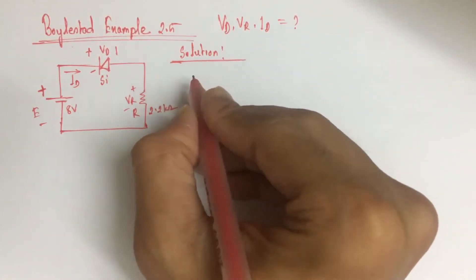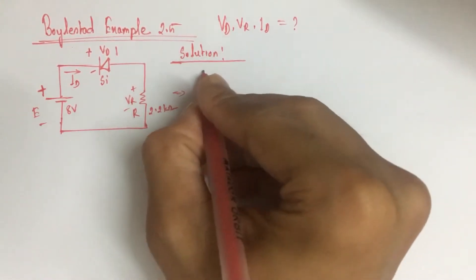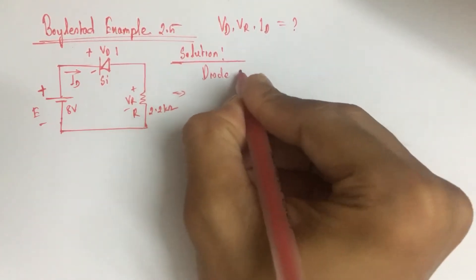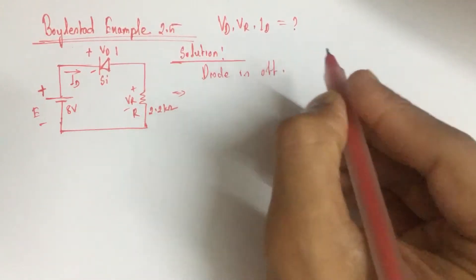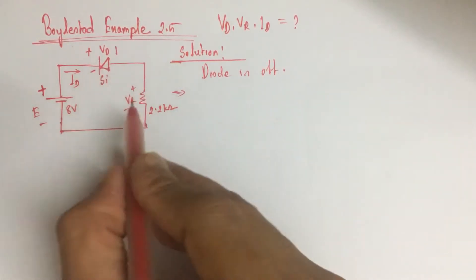Diode is off, which can be replaced by an open circuit. The equivalent of the diode can be replaced by an open circuit.